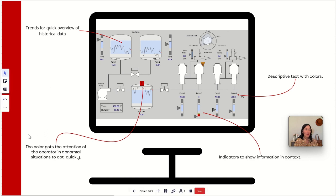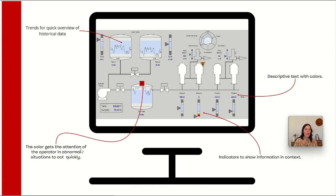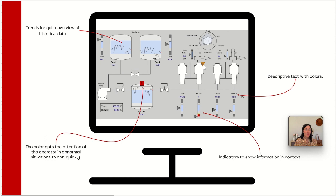Then we have the use of colors on the screen. For the high performance HMI, colors are used to indicate an abnormal situation, so it is very quick for the user to know what's going on. In this example, we have two indicators, and when the operator looks at the screen, they can almost instantly see that something is calling their attention.